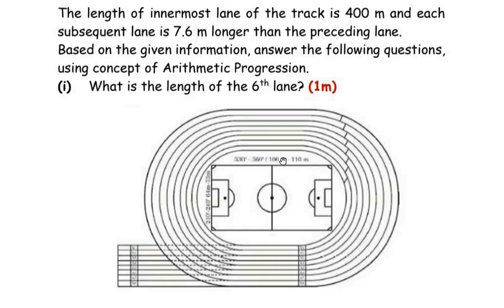Let us understand the question first. The school has built an 8-lane running track — lane 1 through lane 8 — with a football field inside. The first lane is 400m. The second lane is 7.6m longer, so 407.6m. The third lane is again 7.6m longer, giving 415.2m, and so on. This is how the sequence of an AP is formed.